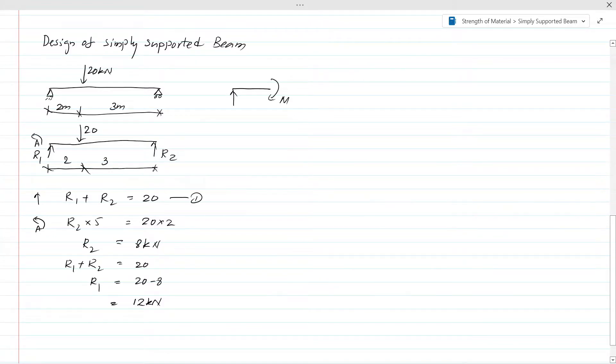Here the R1 we have already calculated is 12kN. We can write M plus 12 times x equals 0. When x equals 0, M equals 0. When x equals 2 meters at the point load, M equals minus 24kN-m.